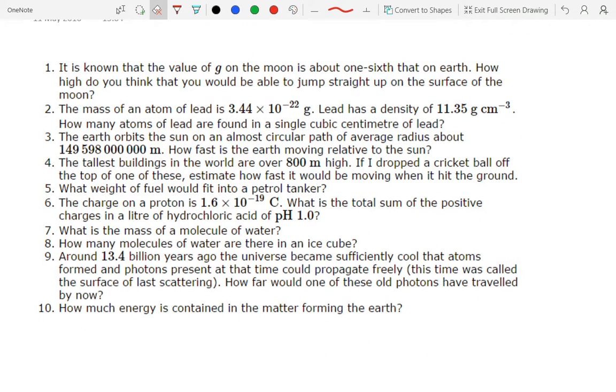So, for question 3, it's telling us that Earth orbits the Sun in an almost circular path of average radius about 1.5 times 10 to the 11 metres. It wants us to work out how fast the Earth's moving relative to the Sun.